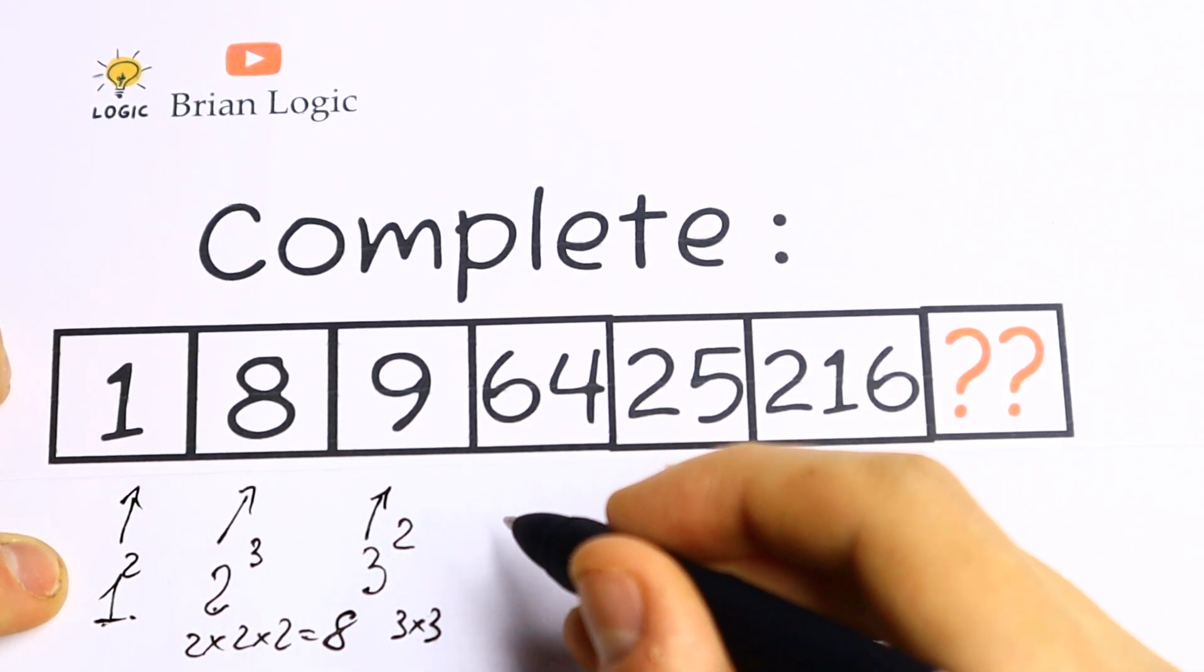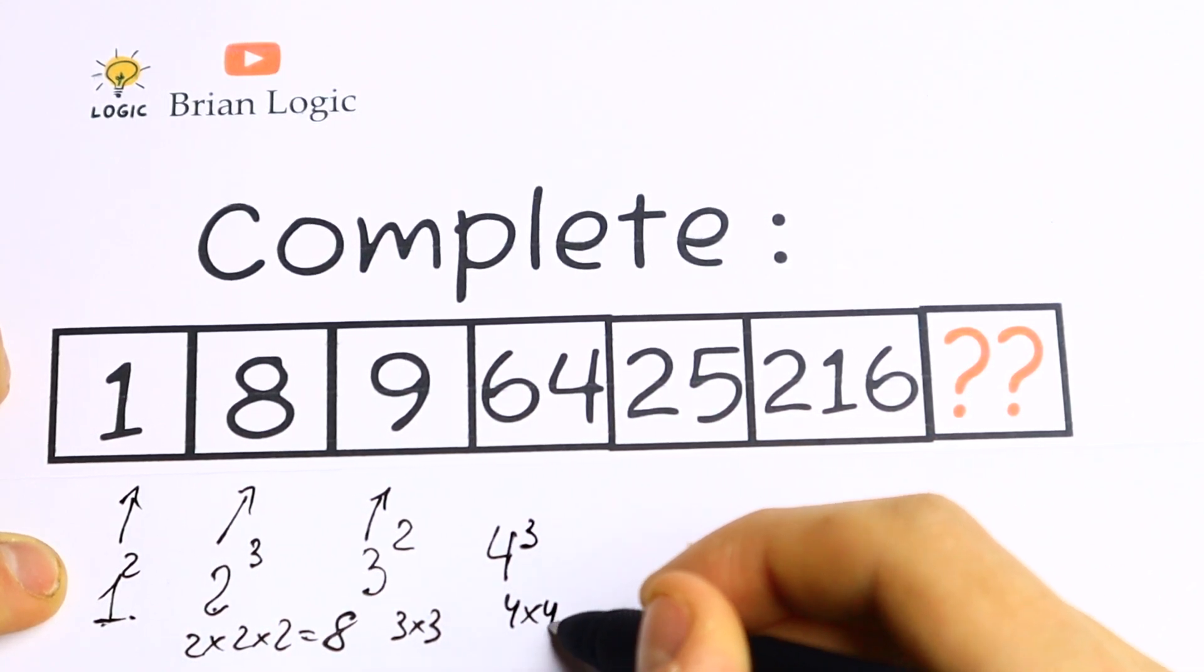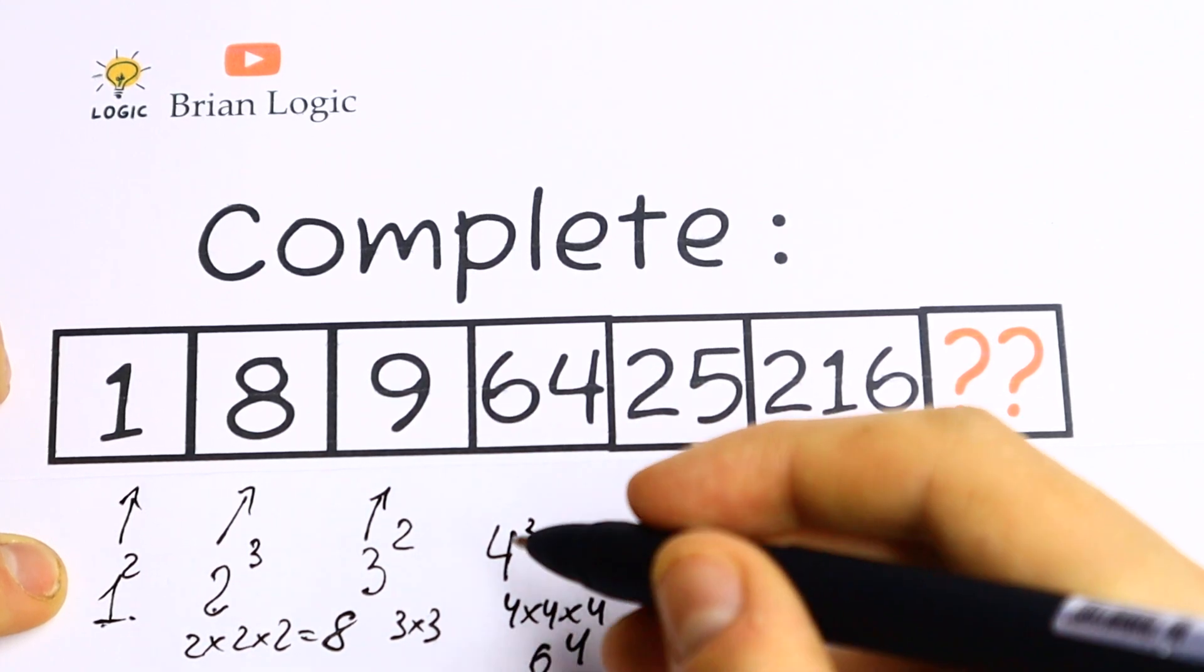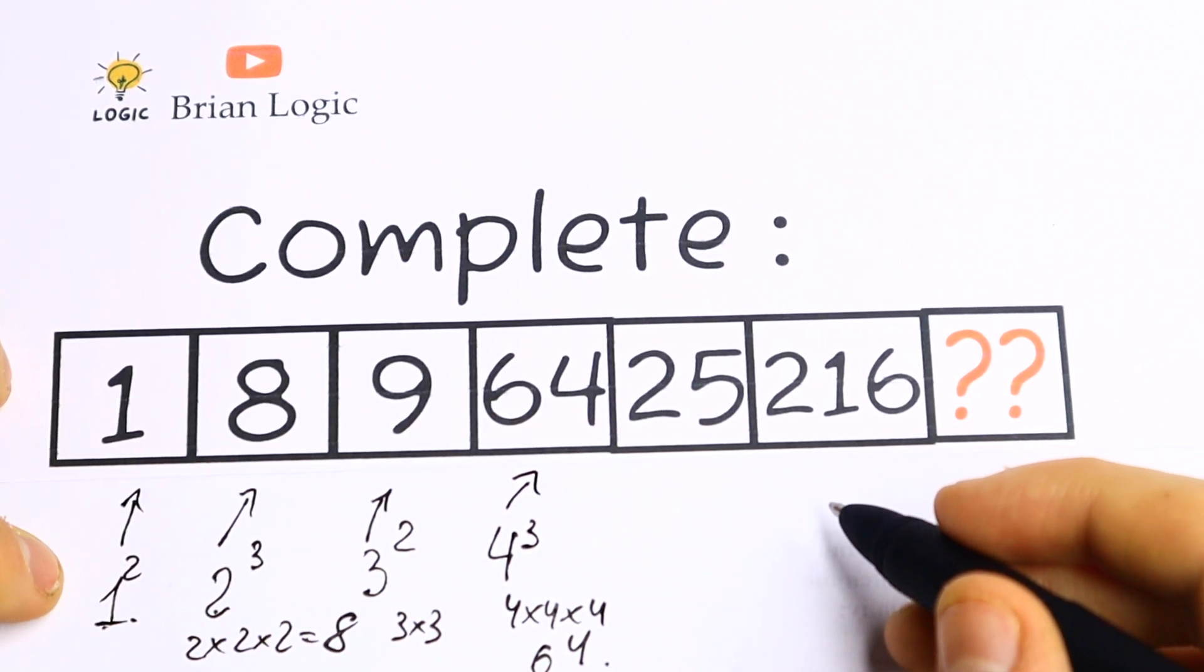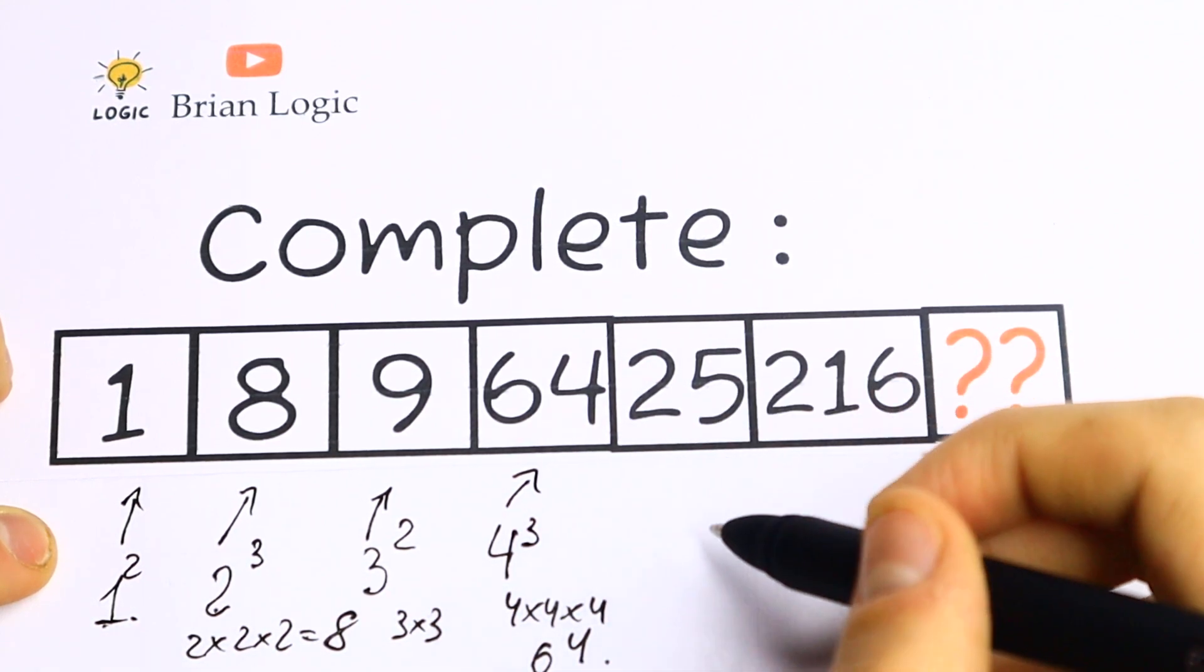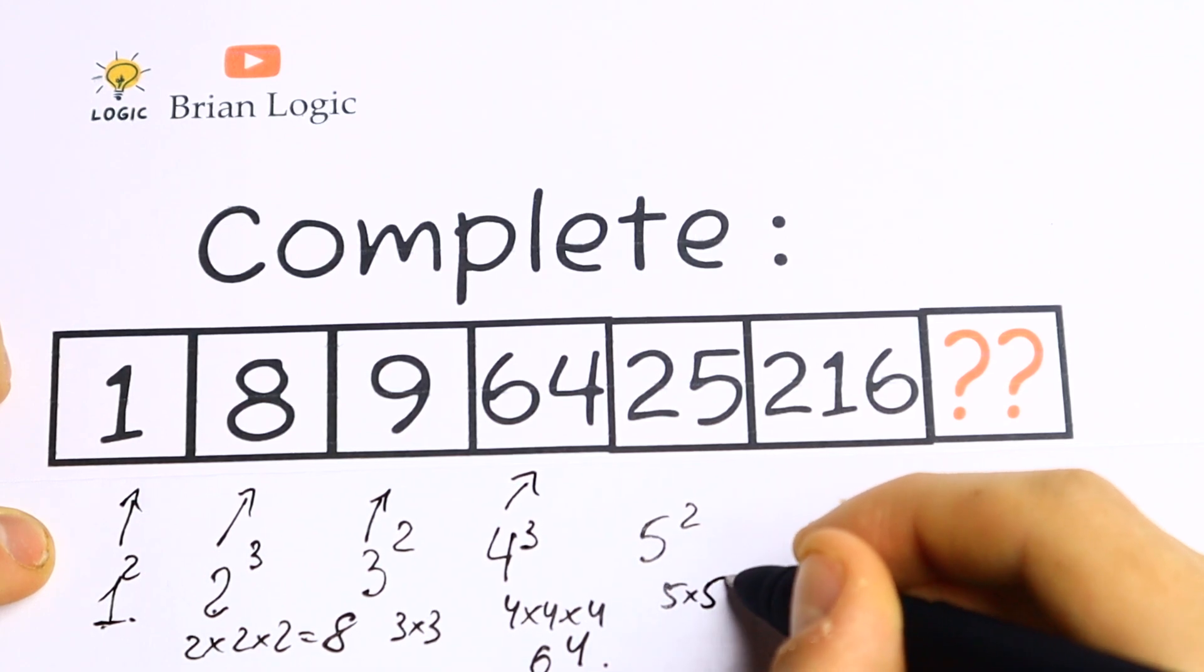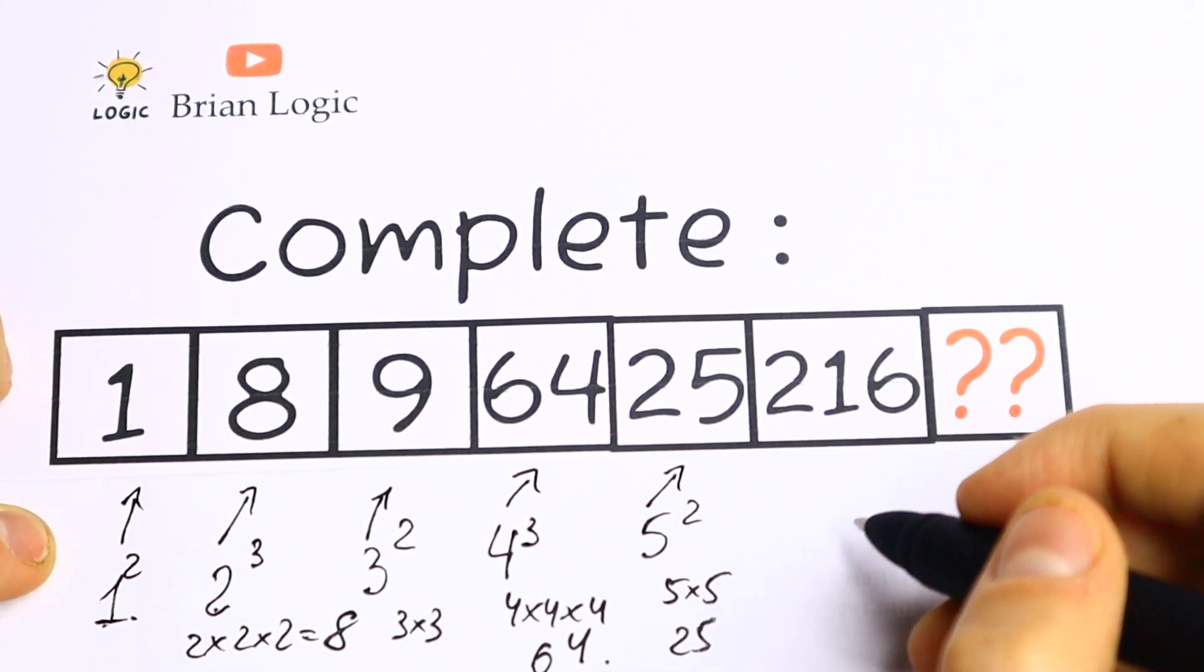This 64 is really good to write as 4 cubed, because 4 times 4 times 4 will be 64. Take a look with this 25. Right now I try to create a natural order 1, 2, 3, 4. This 25 can be written as 5 squared, because 5 times 5 will be equal to 25.